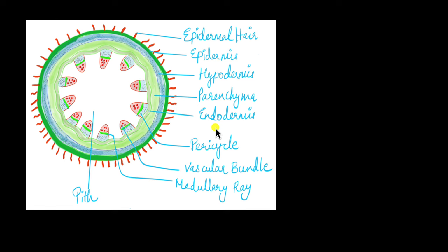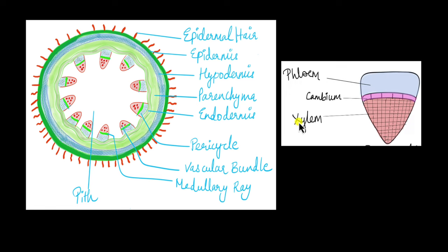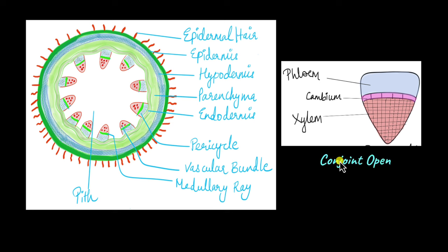In dicot stems, the vascular bundles have phloem and xylem separated by a layer of cambium. This type of vascular bundle in dicot stem is known as conjoint open.